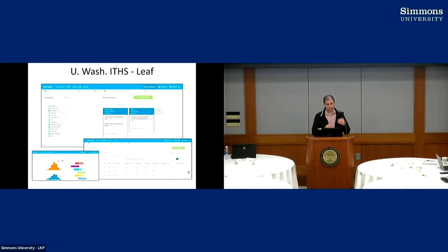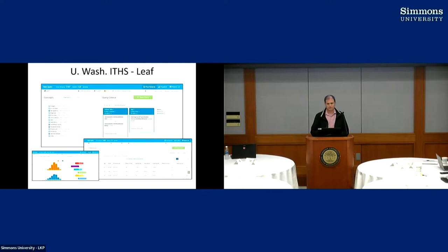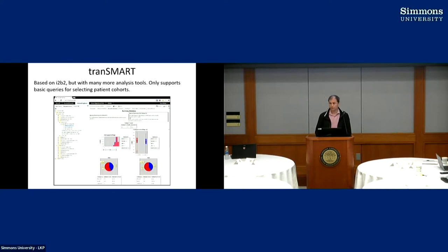A key thing Leaf does is make queries English-readable when you drag things in — rather than just dropping an ICD code, it says 'I'm looking for patients who have a diagnosis of something' so an investigator can read the screen and understand what's being queried. That was incorporated into the Shrine UI. Transmart doesn't have all the query capabilities of I2b2 but has analysis capabilities where you can compare cohorts, do statistical analyses, and bring in genomic and clinical trial data.